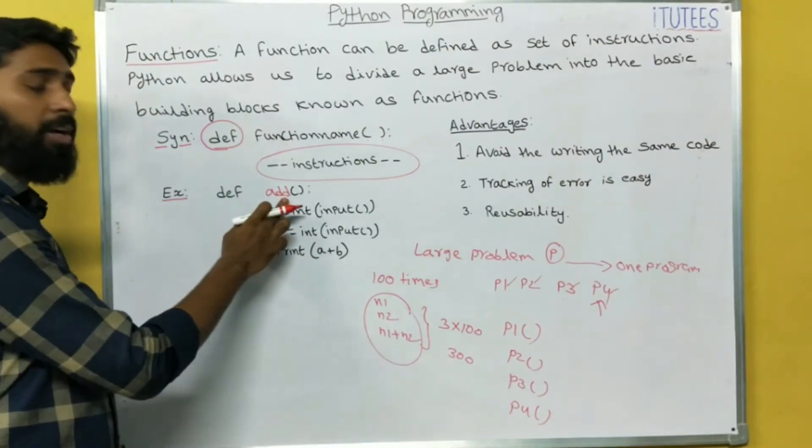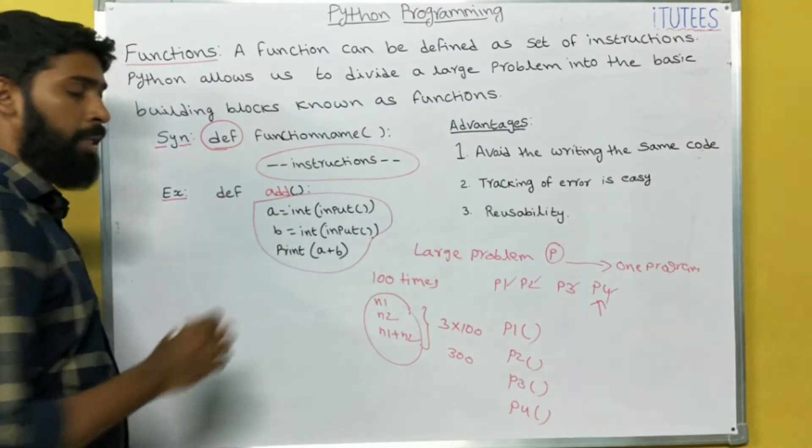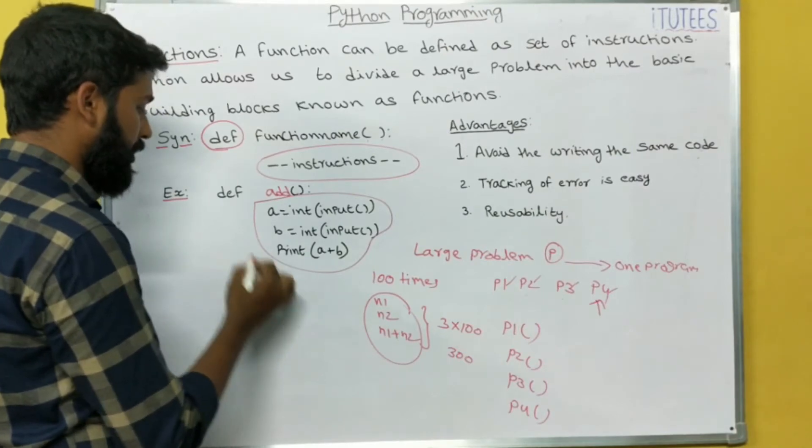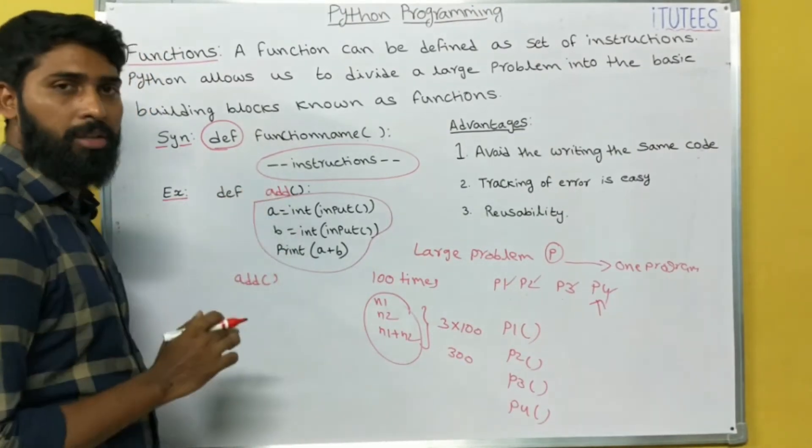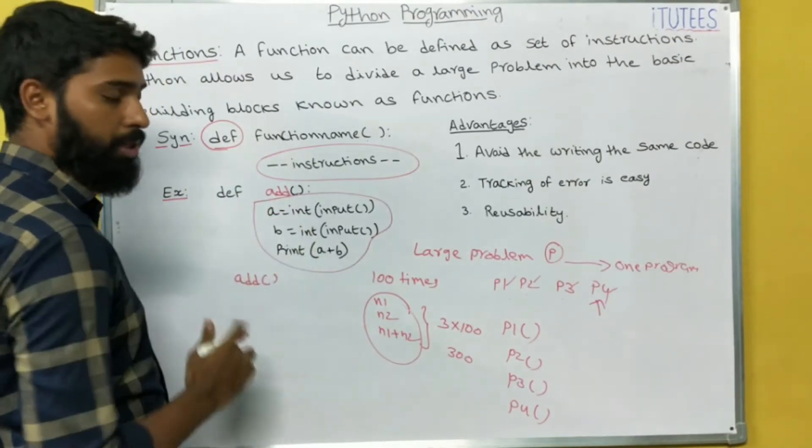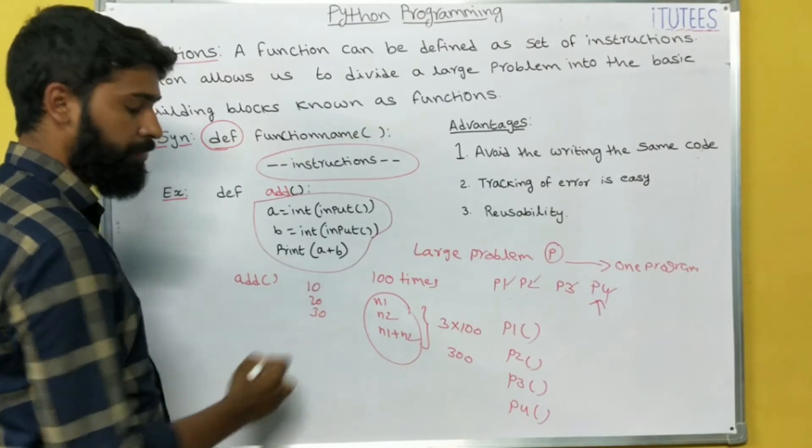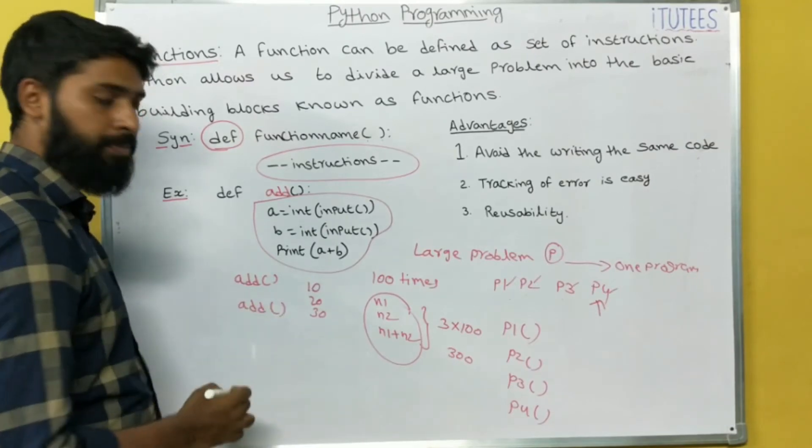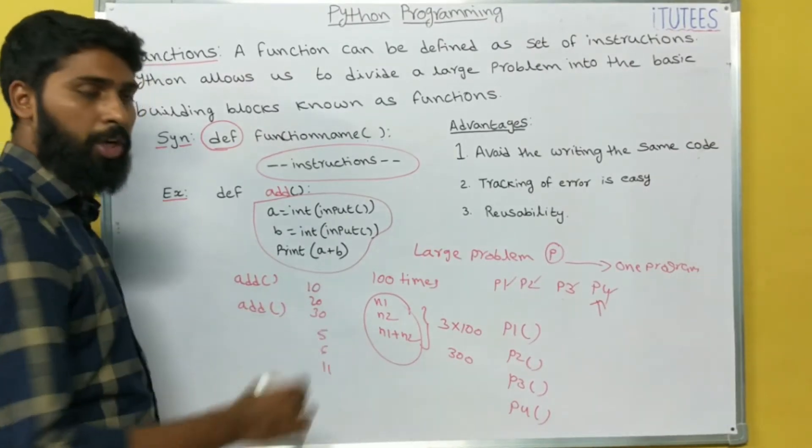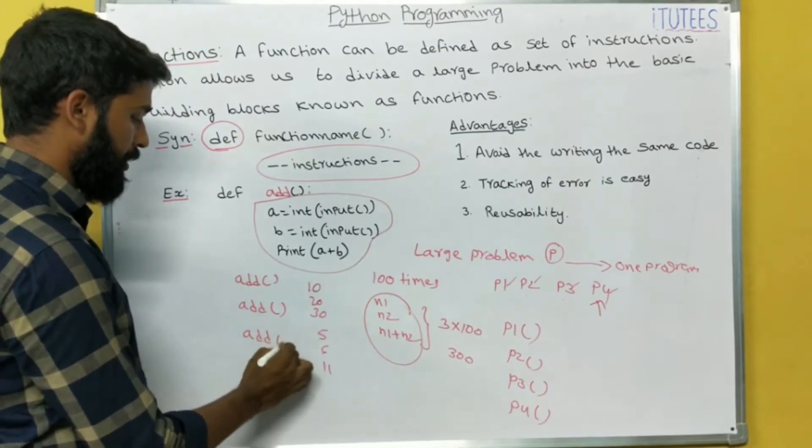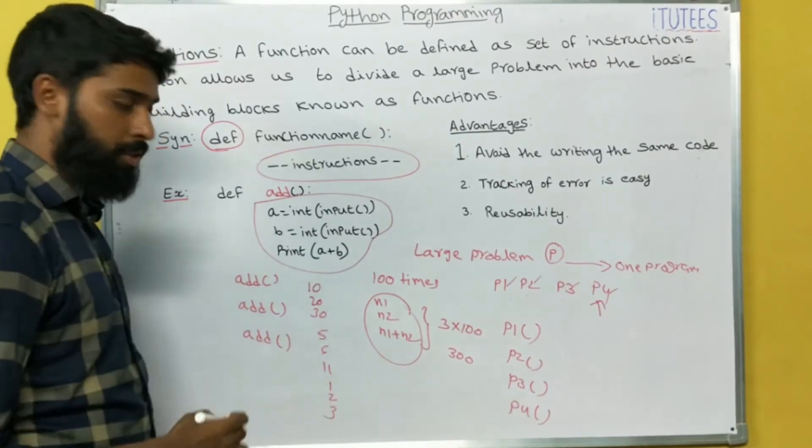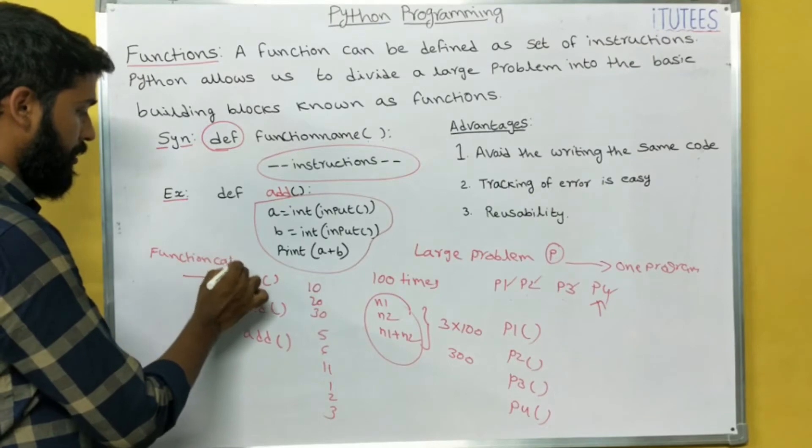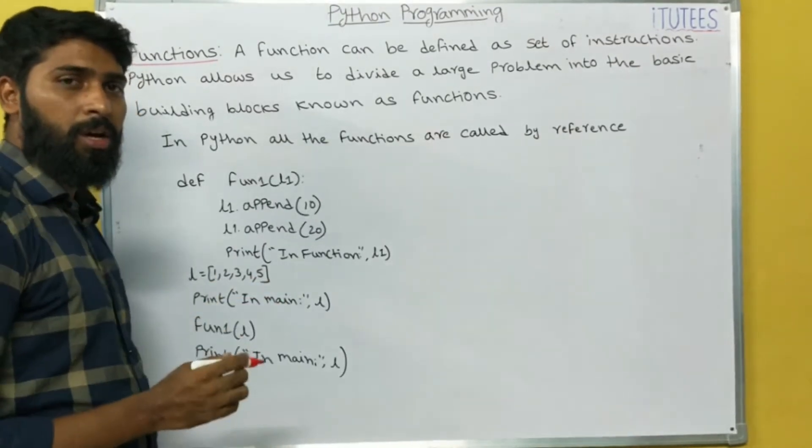Now we can see how to call this function. Simply with function name add. So add means the function is called, the function is invoked. So the cursor is waiting to read the value 10, 20, it prints 30. If I want to again execute this instruction, then also I call simply add. Next it takes the input and prints the output. Again I call add, it takes the input and prints the output. So this we call as a function call.